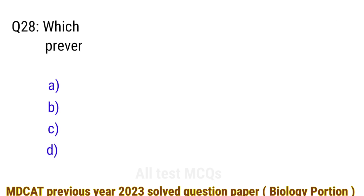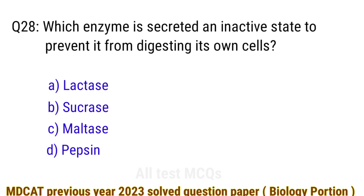Question number 28. Which enzyme is secreted in an inactive state to prevent it from digesting its own cells? The right answer is option D: pepsin.